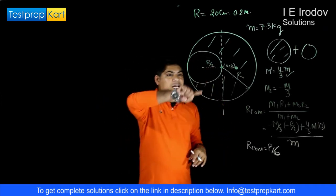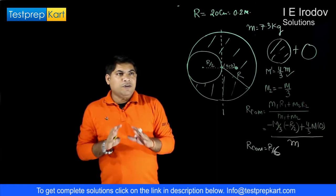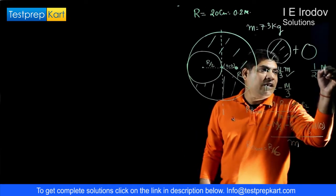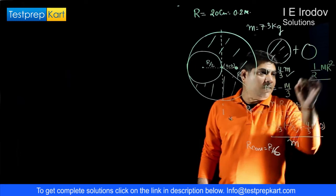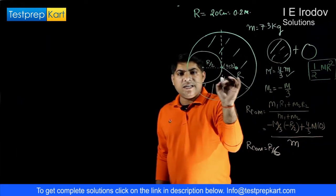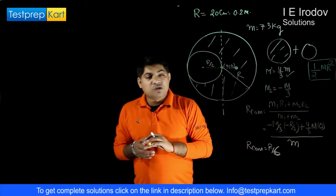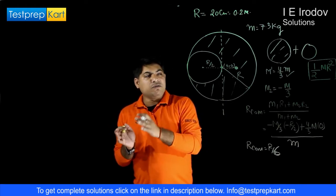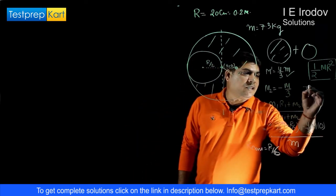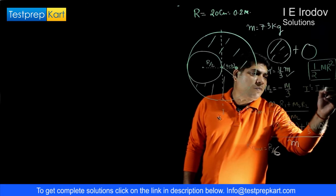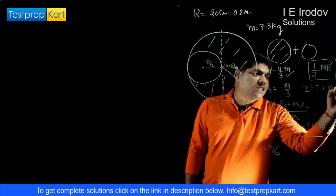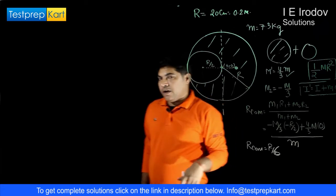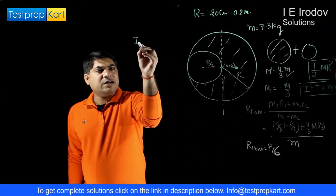Now we calculate the moment of inertia about this center of mass point. We already know the formula for moment of inertia of a disc about its center is ½mr². However, since our axis is away from the main center, we must apply the parallel axis theorem, which states that the moment of inertia about a new axis equals the moment of inertia about the main axis plus mass times the square of the distance between the axes.